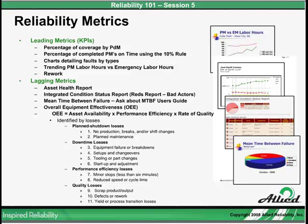In other words, if you have a PM that needs to take place once every 30 days, you have three days to do it in or you're out of compliance. It's okay to be out of compliance as long as it's not a critical asset, and maybe you need to rank your assets based on criticality.